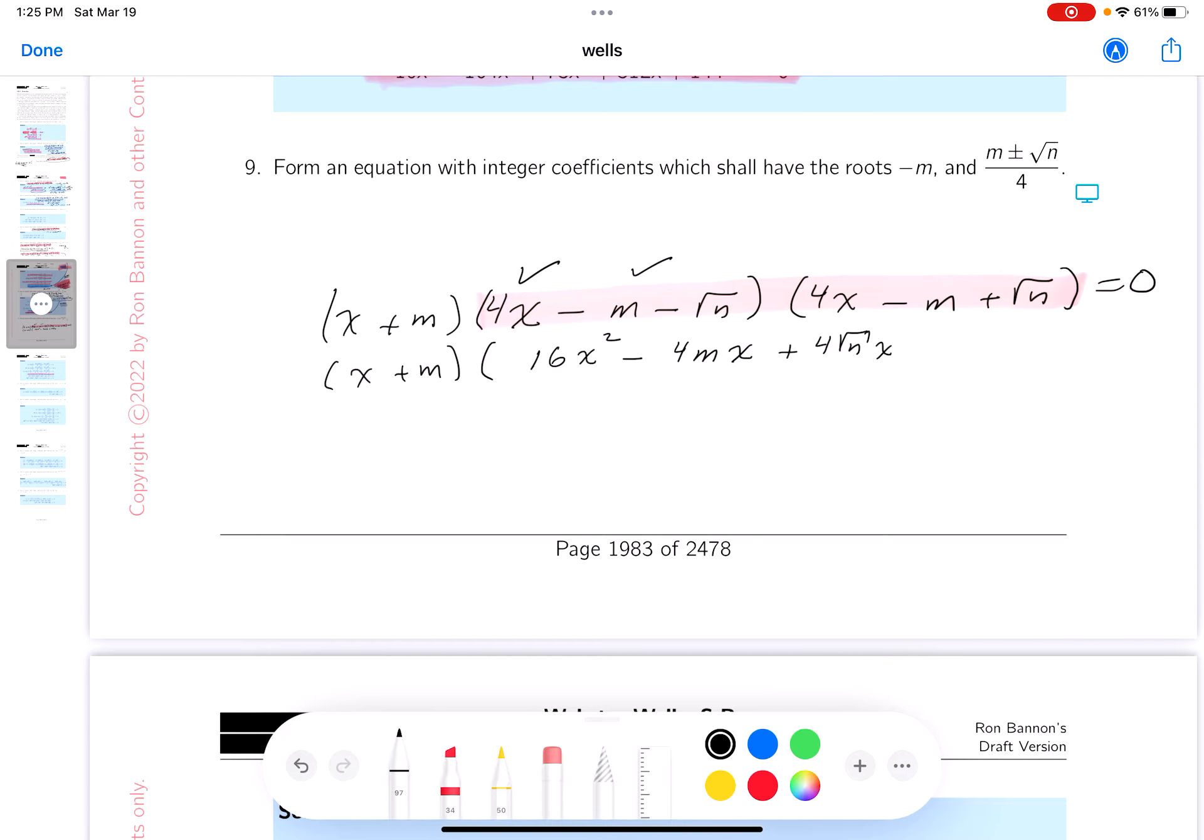I'm going to do this now. What is it going to give you? Minus 4mx. Plus m squared. Minus m root n.